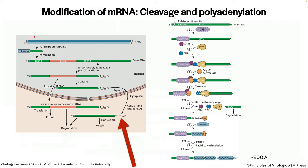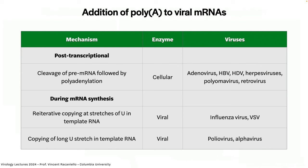At the three-prime end, a poly-A tail is added post-transcriptionally. A longer pre-mRNA is made first, containing an internal poly-A addition signal (AAUAAA) that is recognized by cellular proteins, which cleave the RNA at that site and add approximately 200 adenosine residues to the new three-prime end. The downstream RNA is discarded. For RNA viruses, poly-A is added by different mechanisms: reiterative copying of a poly-U stretch in the template (as in influenza and VSV), or for poliovirus, copying of a long poly-A tail already present at the three-prime end of the incoming genomic RNA.